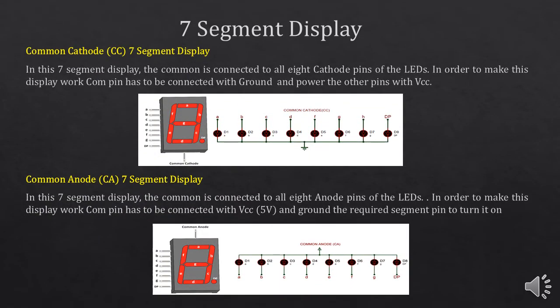There are two types of 7-segment display configurations that are mostly used. One is common cathode configuration and the other is common anode configuration. In common cathode configuration, all the cathodes of the LEDs are connected together. In order to make this display work, the common pin has to be connected with ground and you have to power the other pins with VCC. All the cathodes are connected together and connected with ground, and you apply VCC at the remaining pins.